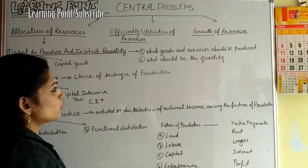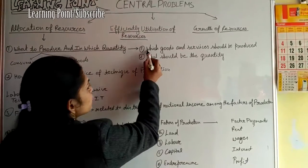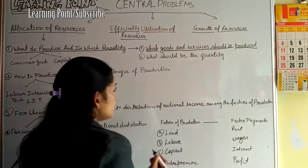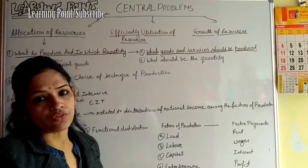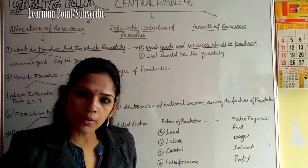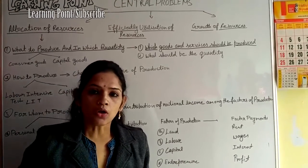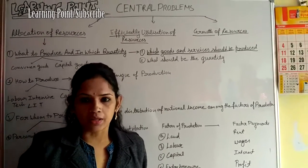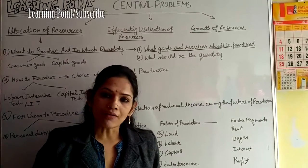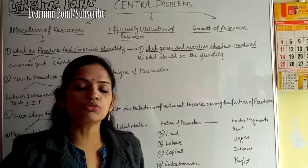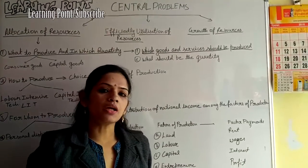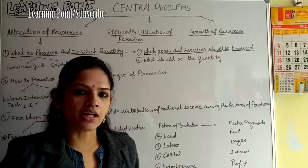This problem can be understood in two ways. First, which goods and services should be produced? With limited resources, any economy must decide whether to produce consumer goods for the household sector or capital goods like tools and machinery for the industrial sector. This depends on the country's condition.